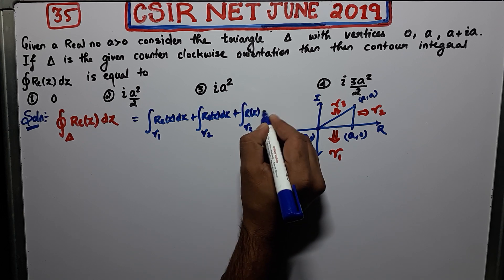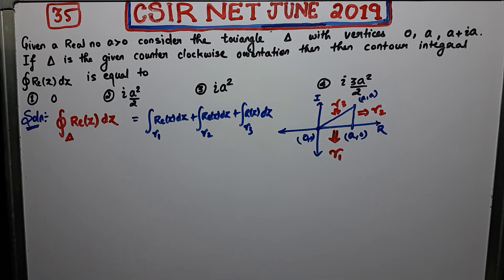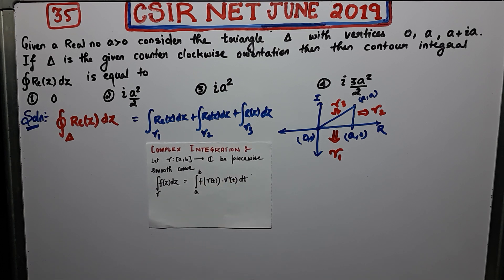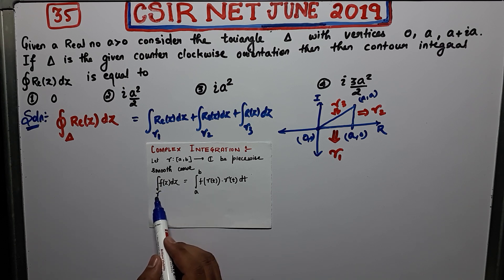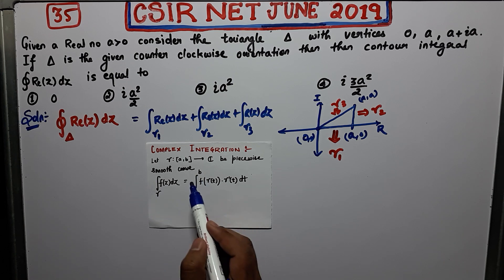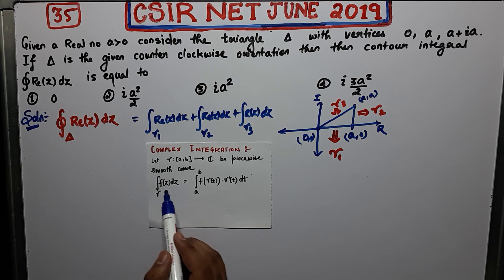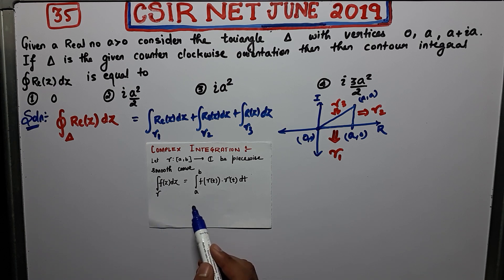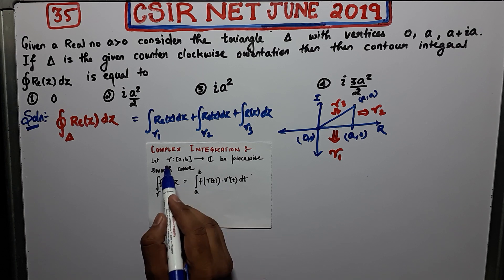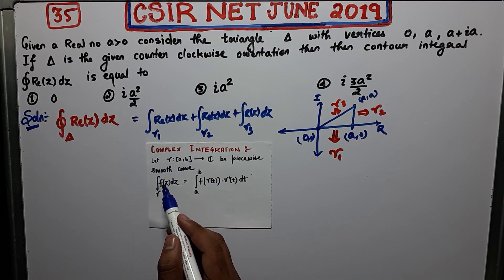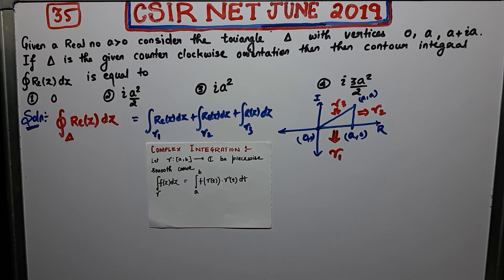This integral will be equal to the integral of Re(z) dz over gamma 1, plus the integral of Re(z) dz over gamma 2, plus the integral of Re(z) dz over gamma 3. Now I will show you the definition of complex integration. If gamma is a piecewise smooth curve and you integrate f(z) dz over gamma, it equals the integral from a to b of f(gamma(t)) · gamma'(t) dt — you are transforming the contour integral into a real integral by parametrizing the contour.